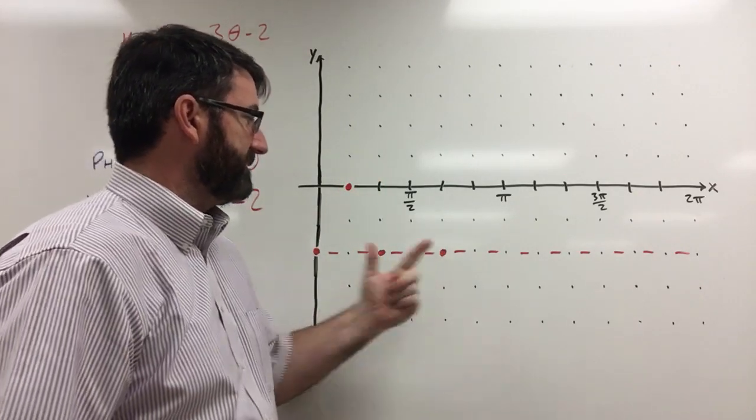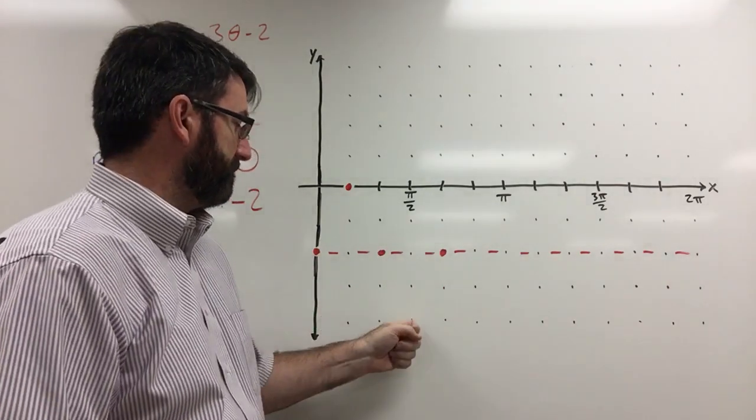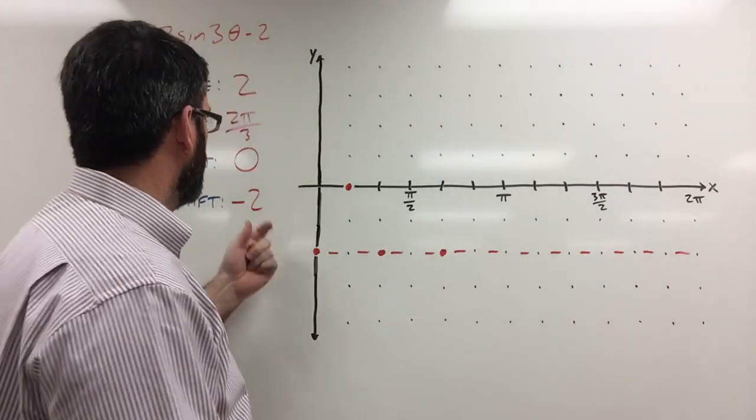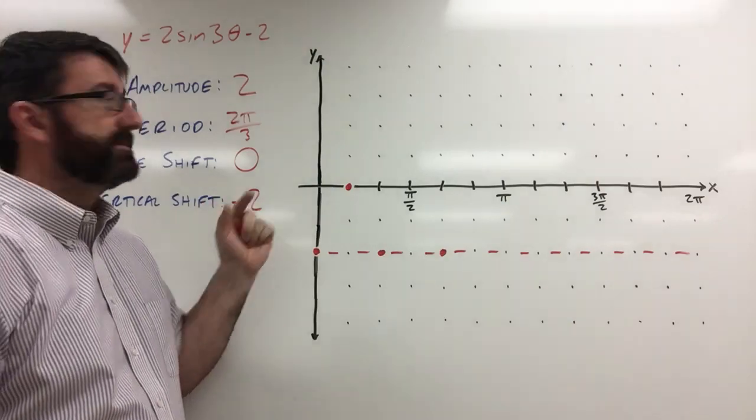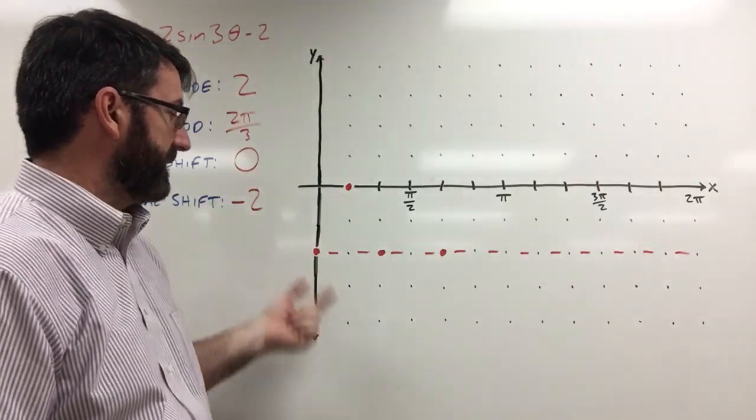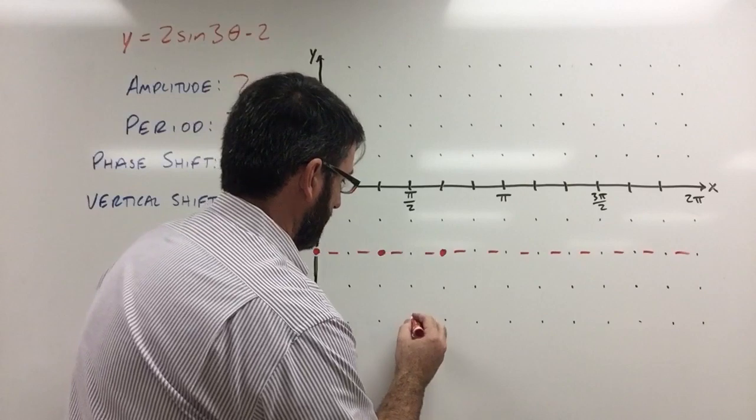And then halfway between these second two points, we're going to reach our minimum, which is going to be the vertical shift minus the amplitude. So negative 2 minus 2 is going to be negative 4.